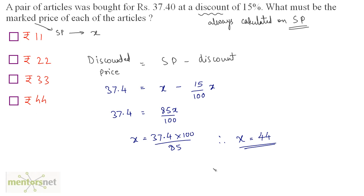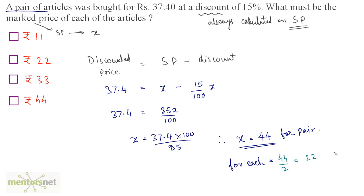However, Rs. 44 is not the correct final answer. The question asks for the marked price of each article, and Rs. 37.4 was the price for a pair of articles. A pair means 2 articles, so divide by 2: 44 / 2 = Rs. 22. The marked price for each article is Rs. 22.